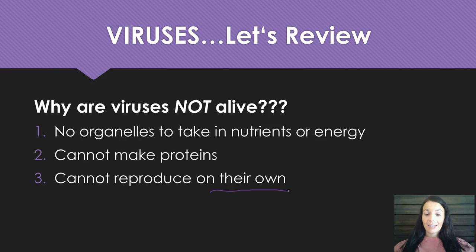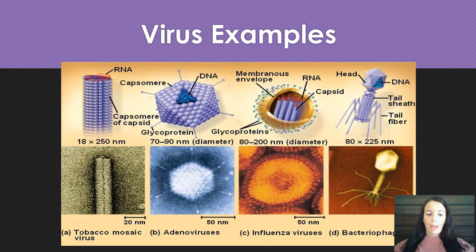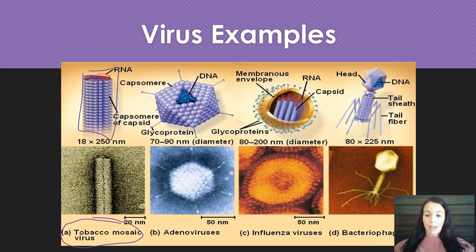Here are some examples of different types of viruses. Tobacco mosaic virus, which we talked about, is almost like a tube shape. Then you have adenoviruses and influenza viruses, which are both a little different. And then the bacteriophage is what we most commonly talk about, especially in terms of structure.